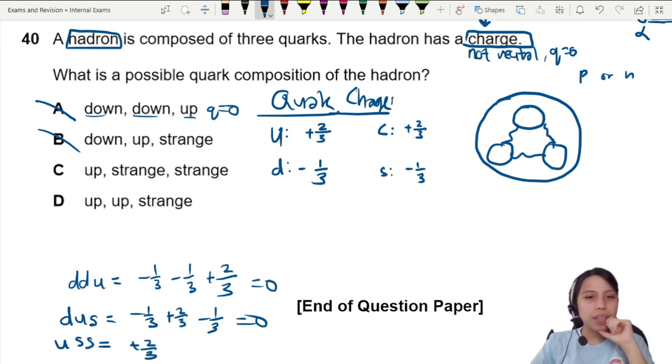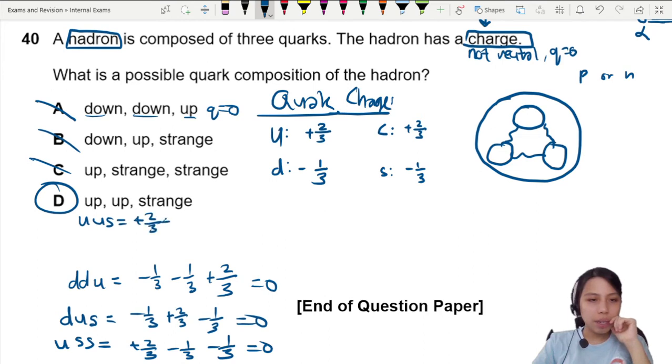Plus two over three minus one over three minus one over three, also zero. Okay, the last one confirmed correctly. Let's check this one. Up, up, strange. Two over three plus two over three minus one over three. This will give us positive one, like a proton. Positive one charge, q is positive one.